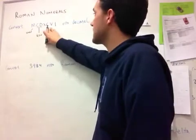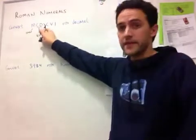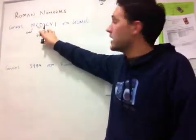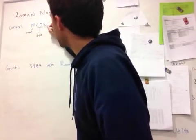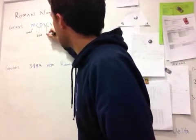Same thing happens with the X and the C here. Since an X is 10 and it's smaller than the C, it needs to be subtracted. So this X and this C together gives us 90.